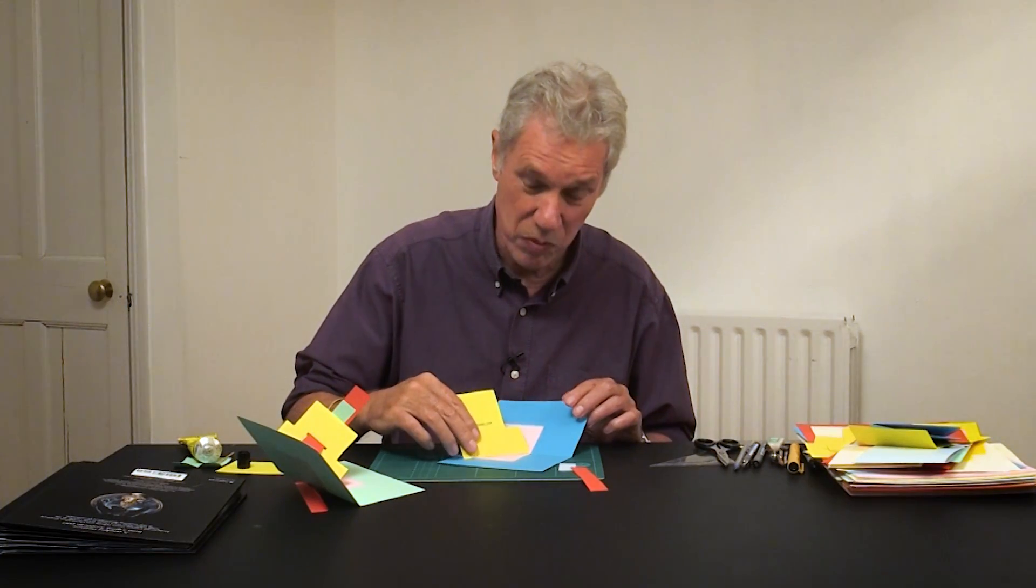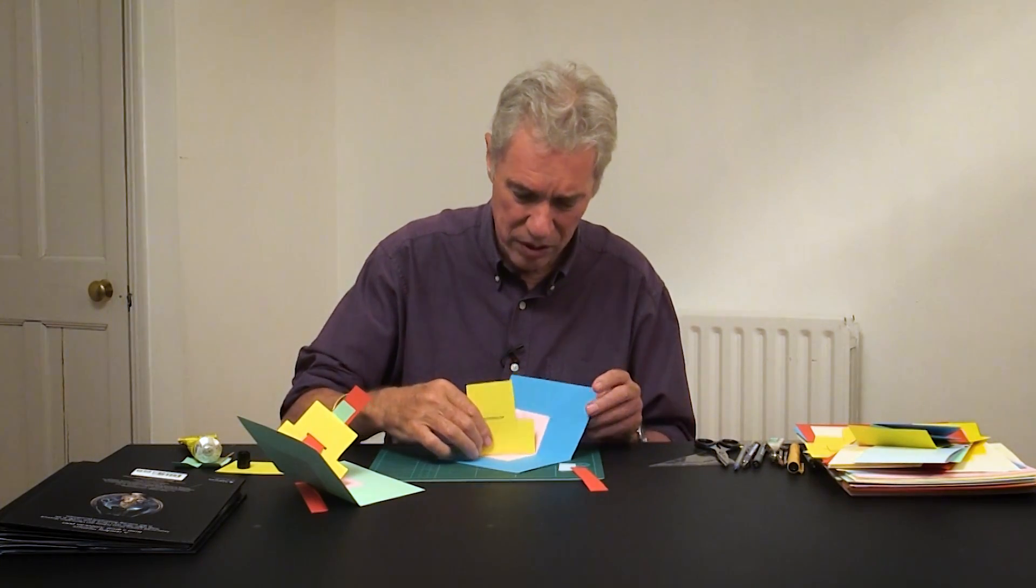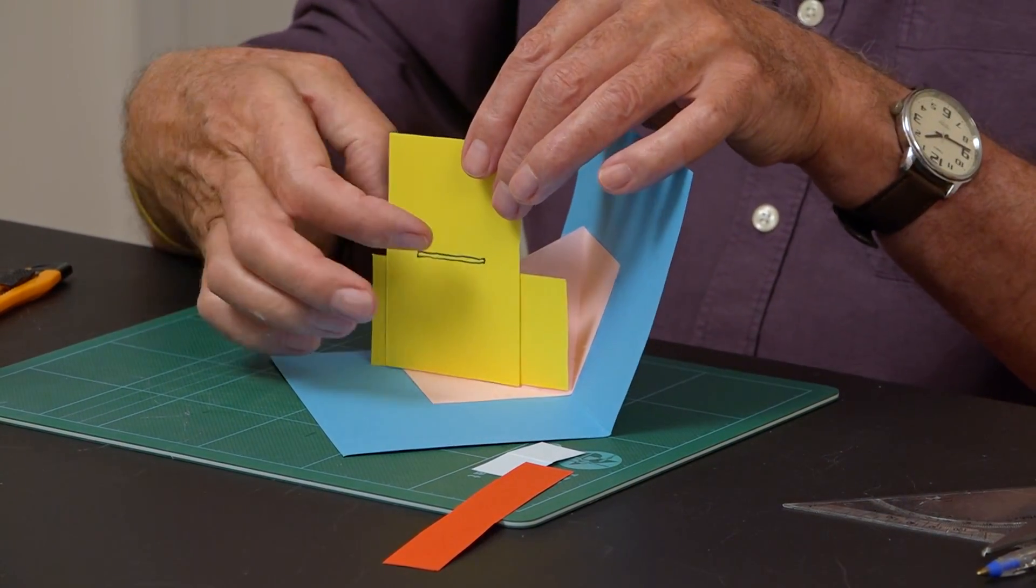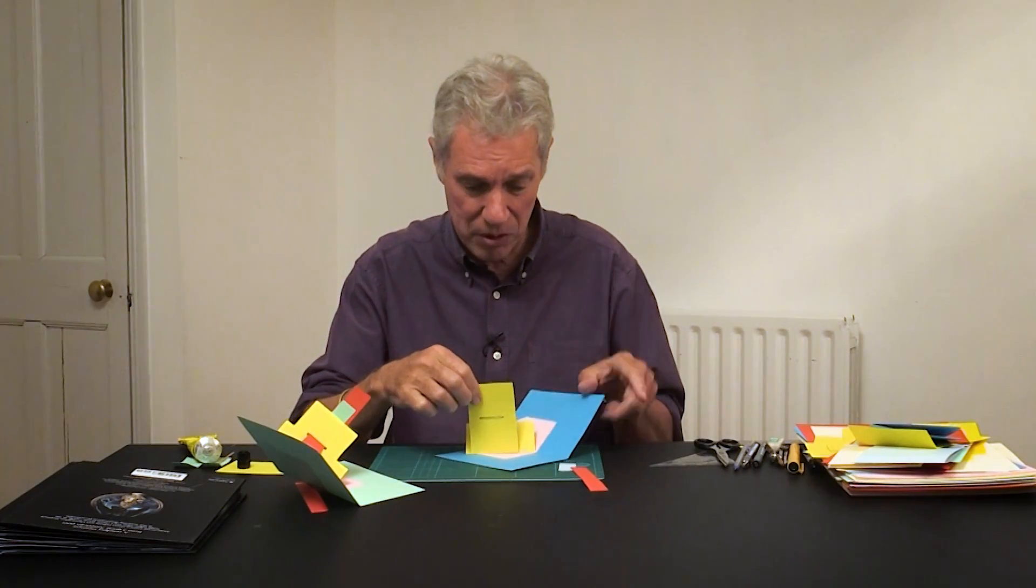You could probably make it all out of one card, but I think it's also quite good to keep it tough so it's several thicknesses. So I've marked the slot. It's going to be parallel with the crease at the bottom. I'll just cut it out.